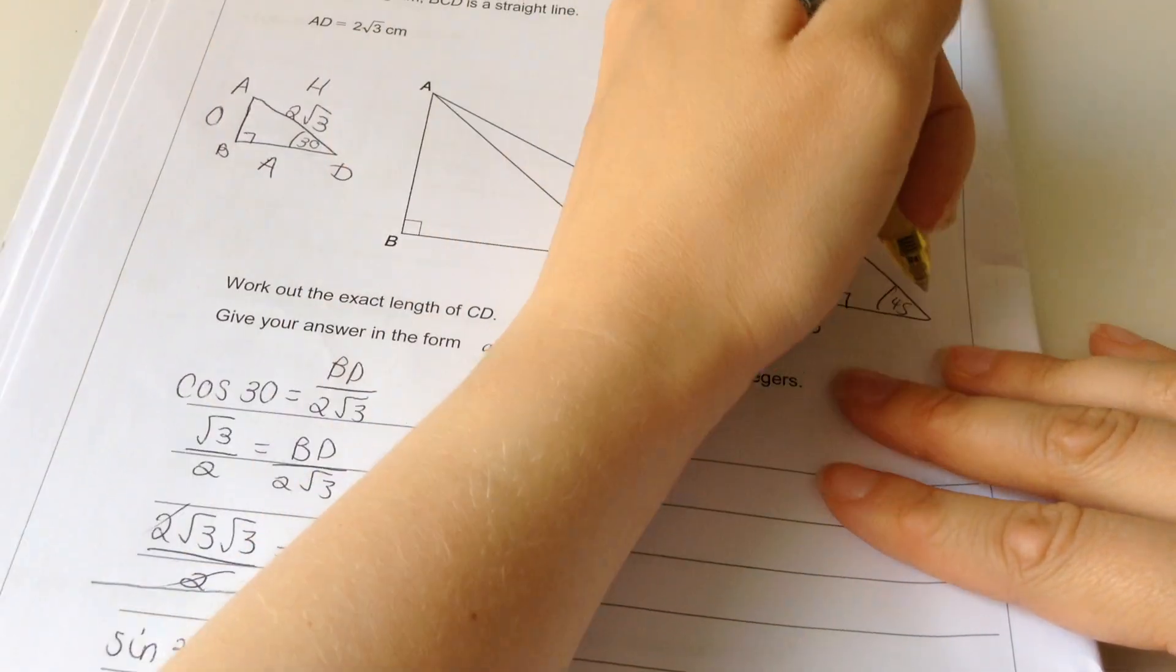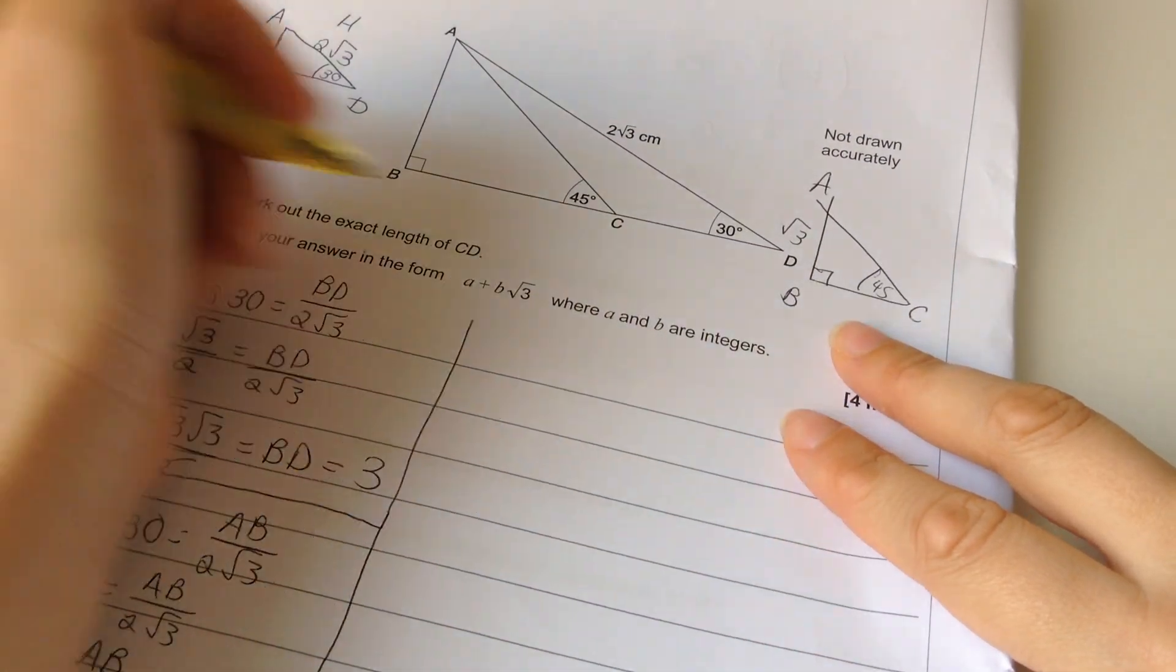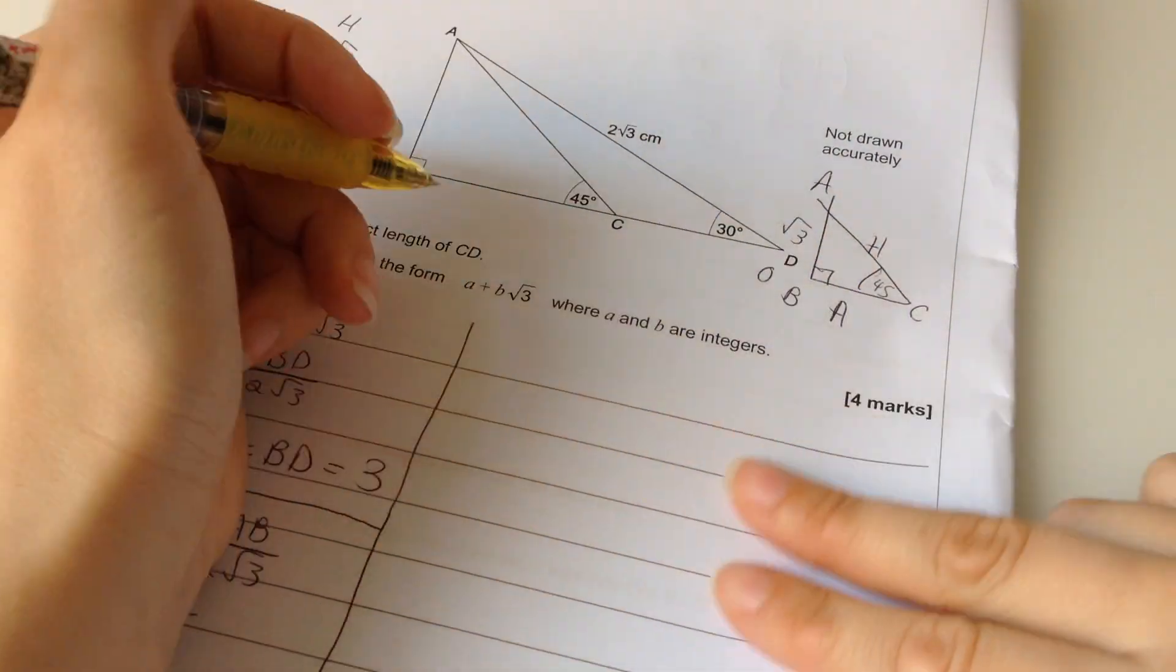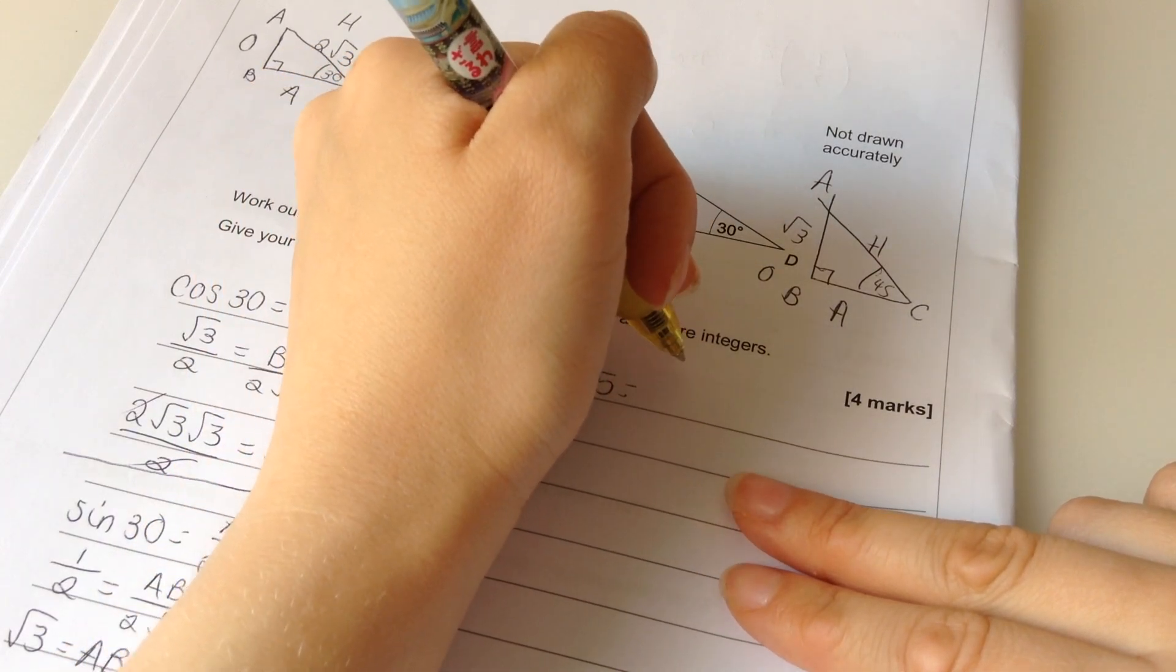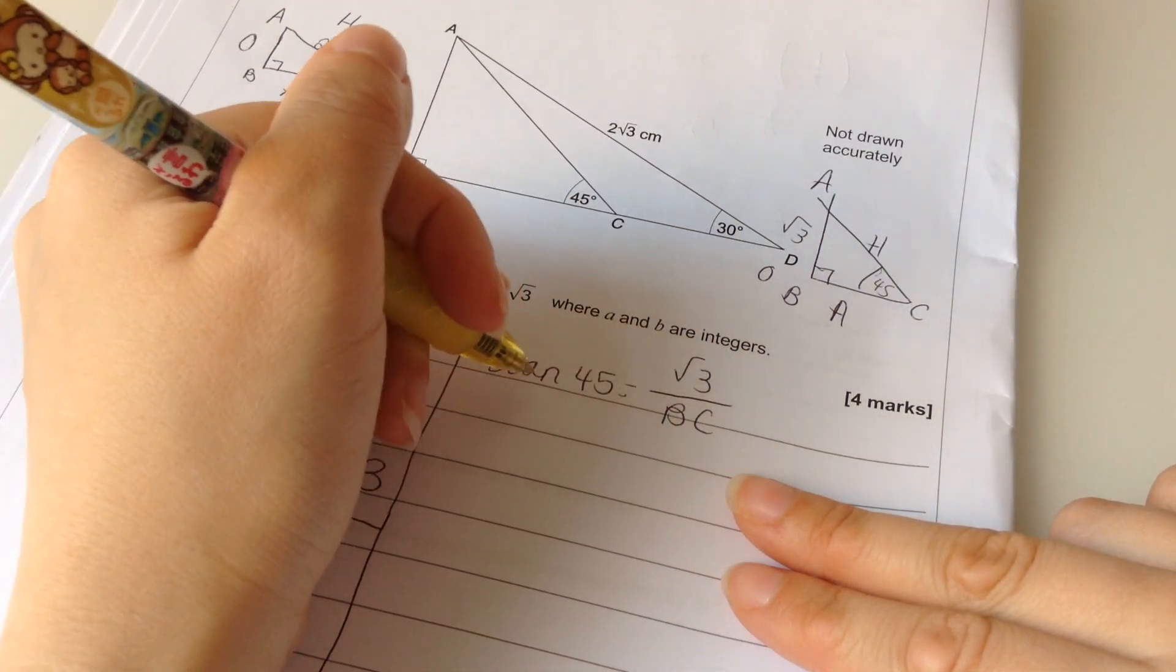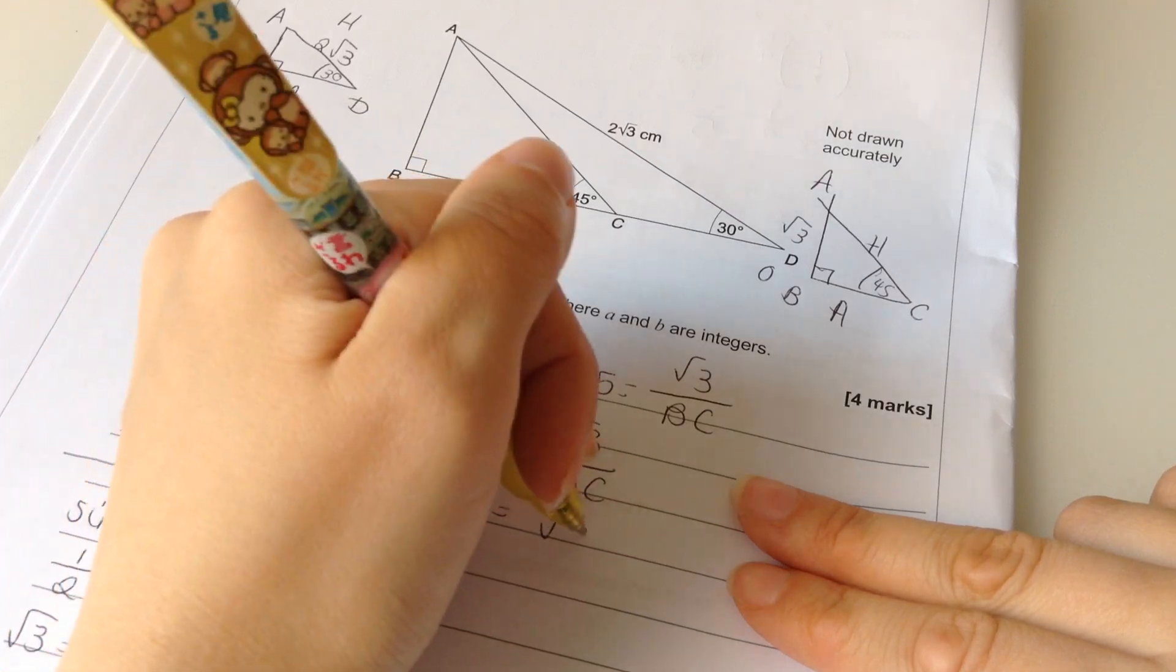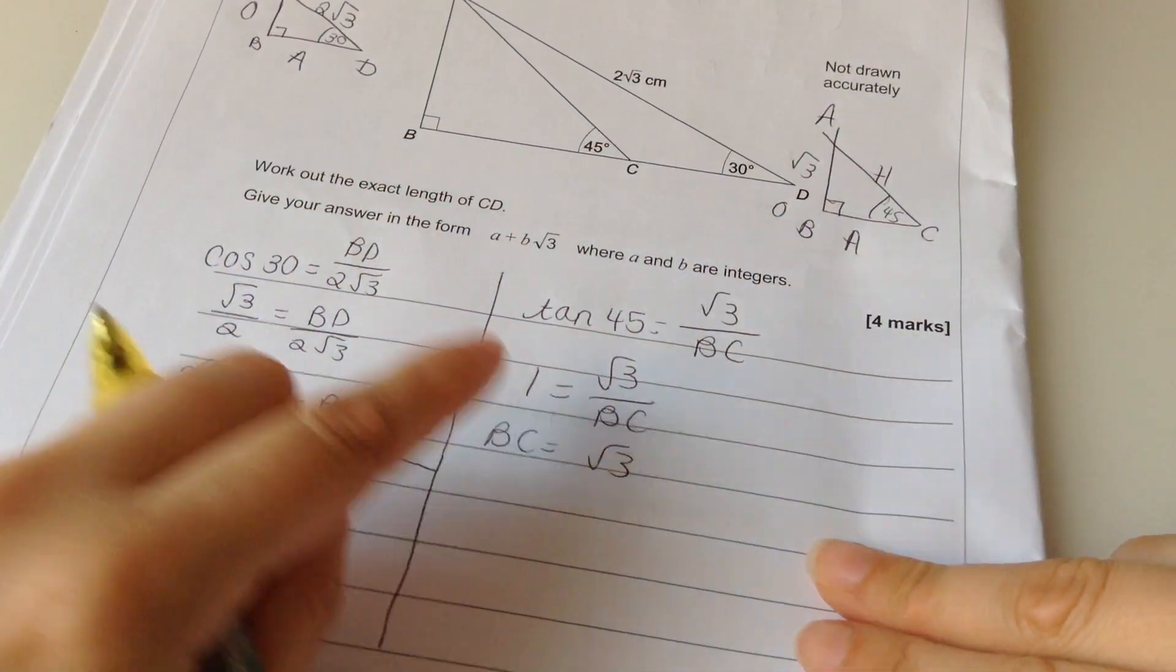Sine of 30 is a half. So, times by 2 root 3, that's just going to give root 3. So, AB is root 3. This is triangle ABC. Okay, so then I want BC. So, that's A, H, O. I'm going to use tan. Right, I'm going to use tan. Okay. Tan 45 equals O over A. Tan 45 is 1. So, BC equals root 3.